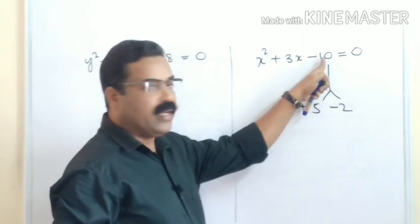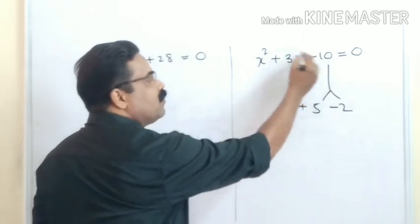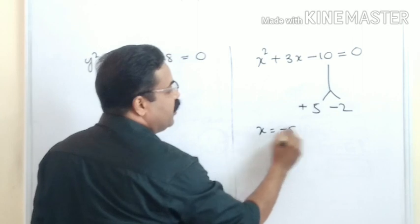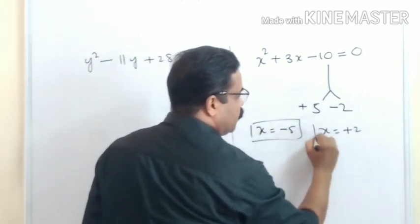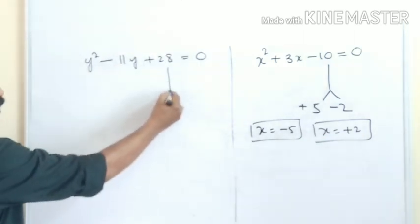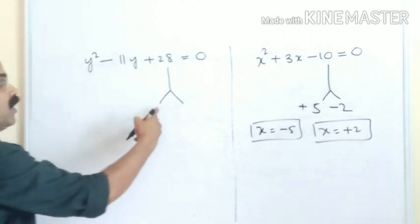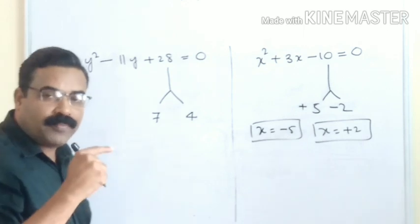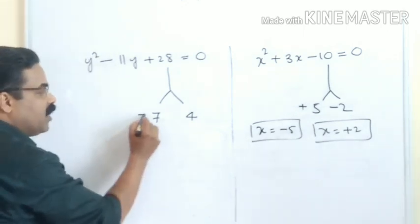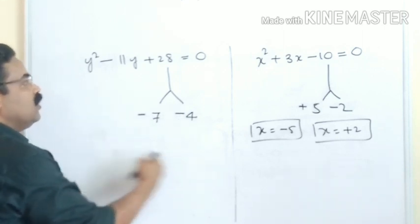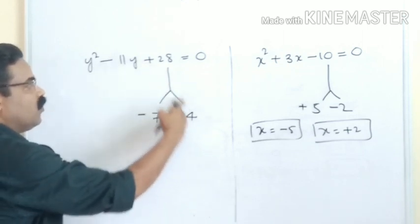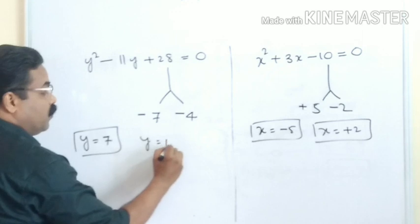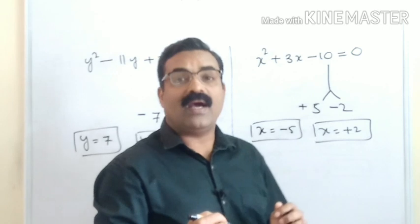This method is called splitting the middle term. For y² − 11y + 28 = 0, the number is 28. Split: 7 × 4 = 28 and 7 + 4 = 11. Since we need −11, take −7 and −4: (−7) + (−4) = −11 and (−7)(−4) = +28. So y = +7 and y = +4.